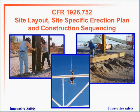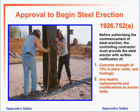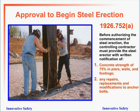Let's start out — numbered as they are in the standard. The first is 1926.752, which deals with site layout, site-specific erection plans, and construction sequencing. You need to get from the general contractor written approval to begin steel erection. Before authorizing commencement, the controlling contractor must provide the steel erector with written notification that the concrete strength is at least 75% in the piers, walls, and footing, and must disclose any repairs, replacements, or modifications to anchor bolts that have been made.